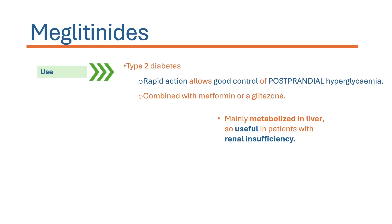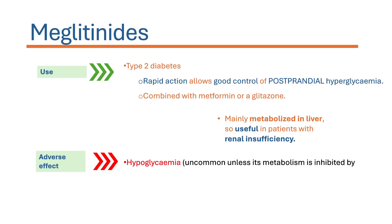In patients with renal insufficiency, metformin has to be administered very carefully, making meglitinides a preferred alternative. Regarding adverse effects, all oral hypoglycemic agents carry a risk of hypoglycemia, though it is uncommon with meglitinides unless metabolism is inhibited by drugs such as gemfibrozil. Hypoglycemic episodes are more common with sulfonylureas, and are very rare with metformin, which is considered a safer drug in that regard.